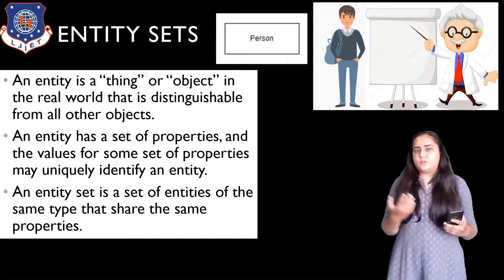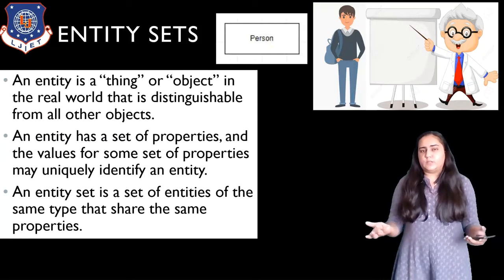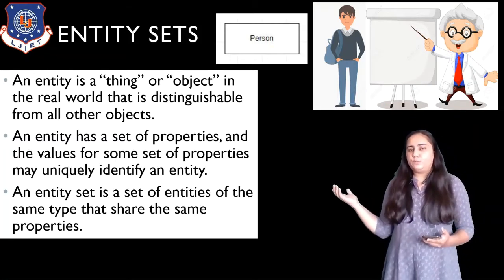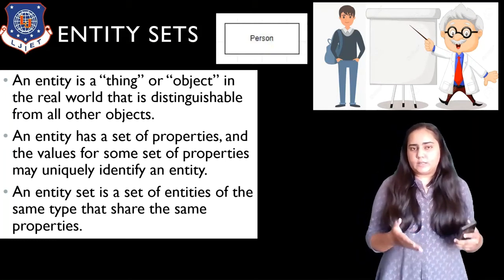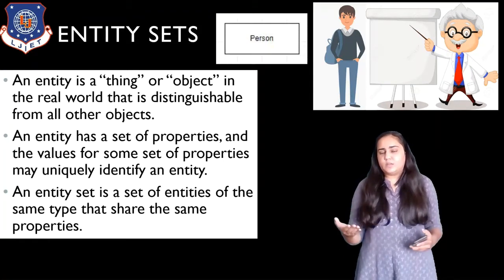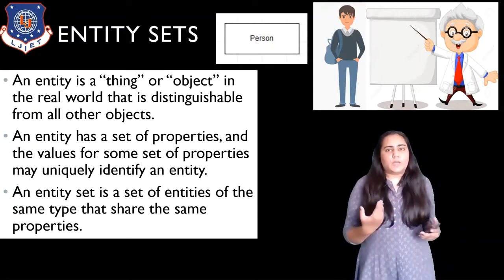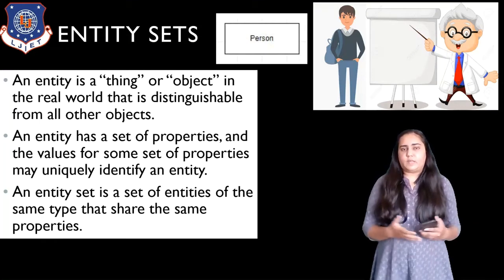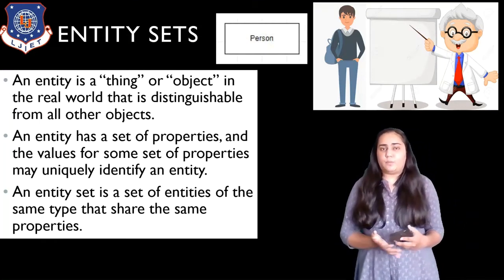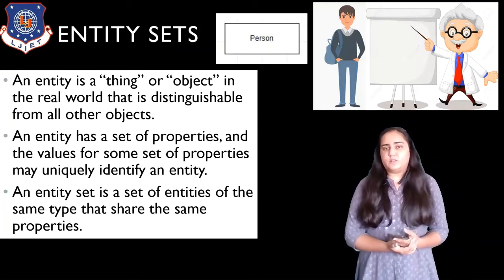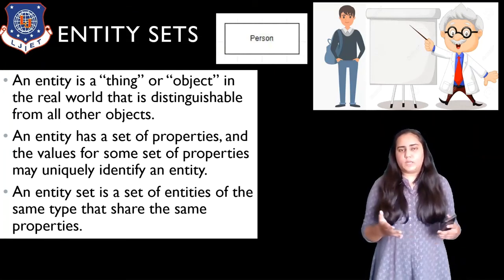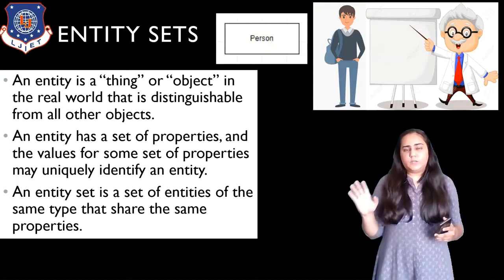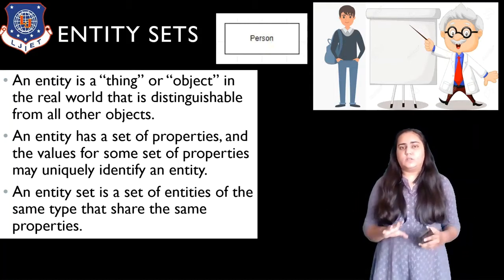Suppose you are in a university — you're going to see a lot of people, so a person is an entity. That person could be either a student or a professor. A person is a thing or object in the real world, and you can distinguish it from other things on campus like trees, chairs, or tables. Every person would have a name, a phone number, an email ID, and so on. That's why it is known as an entity set — a set of such entities stored together.